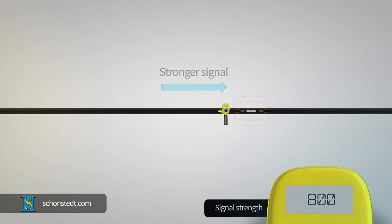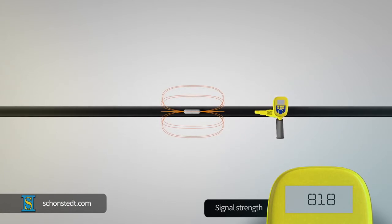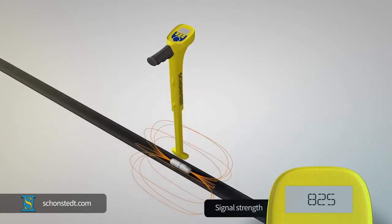Then, keep moving in that direction while the signal strength increases. When you move past the sonde location, the signal will start dropping again, giving you a general idea of the sonde's location.